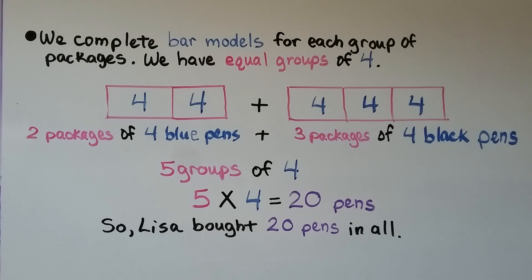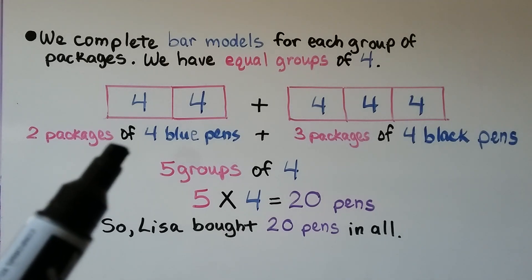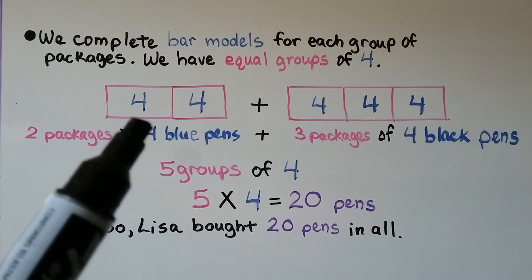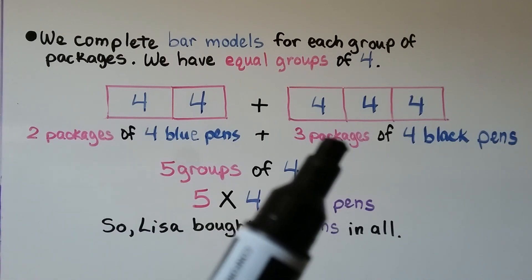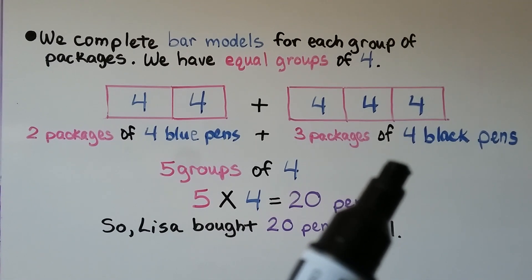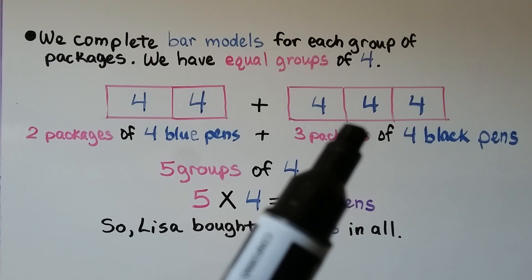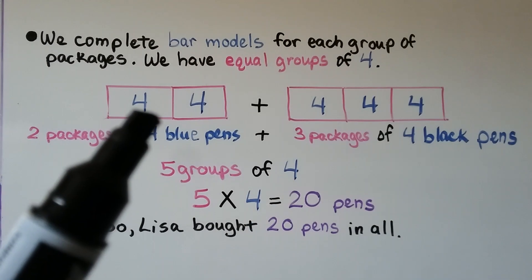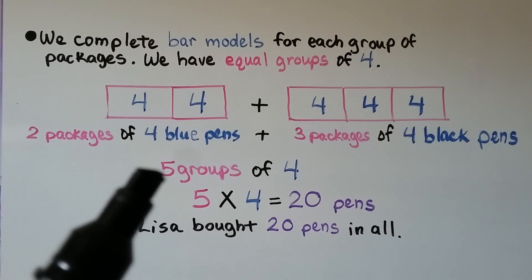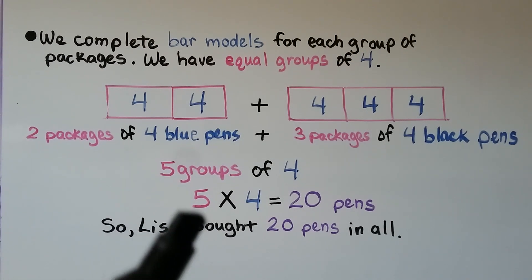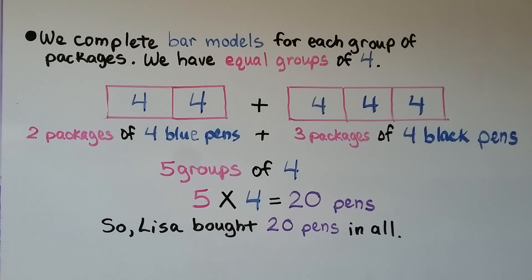We complete bar models for each group of packages. We have equal groups of four. She had two packages of four blue pens — that's two groups of four — and three packages of four black pens — that's three groups of four. Two groups plus three groups makes five groups of four. Our multiplication sentence is five times four, which equals twenty. Lisa bought twenty pens in all.